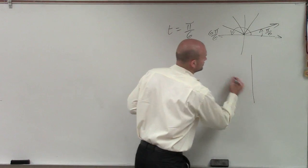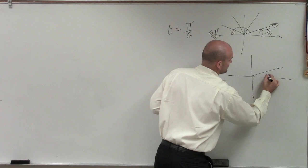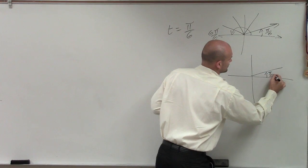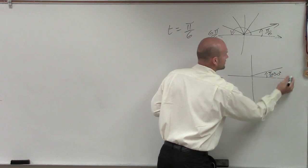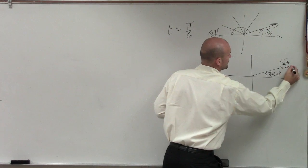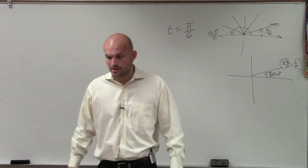If you guys remember on our unit circle, that first point, which is pi over 6, which is 30 degrees, was square root of 3 over 2 comma 1 half.